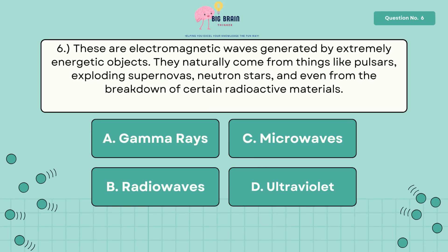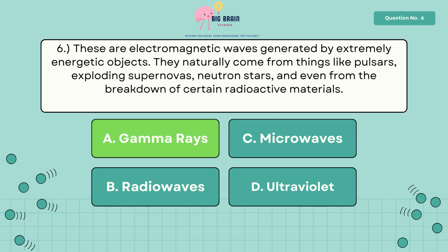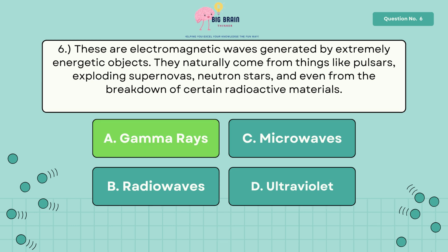Six, these are electromagnetic waves generated by extremely energetic objects. They naturally come from things like pulsars, exploding supernovas, neutron stars, and even from the breakdown of certain radioactive materials. The answer is letter A, gamma rays.